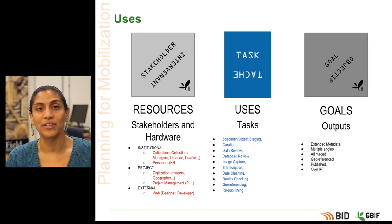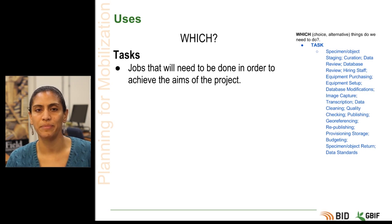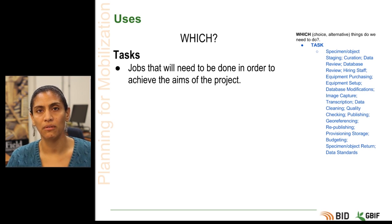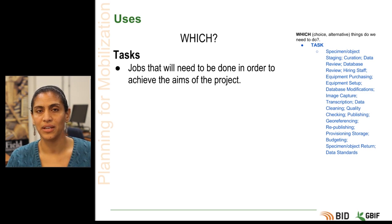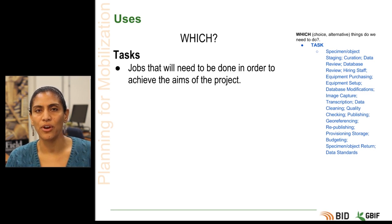The second element of the definition is uses — the actual work tasks that will need to be carried out by stakeholders in order to successfully accomplish your goals. Tasks represent which things you need to do. The set of tasks is largely dependent on the type of digitization needed to create a publishable dataset, but will most likely include some or all of the following: specimen and object staging, curation, data review, database review, image capture, transcription, data cleaning, quality checking, geo-referencing, and republishing. Remember that no one size fits all.